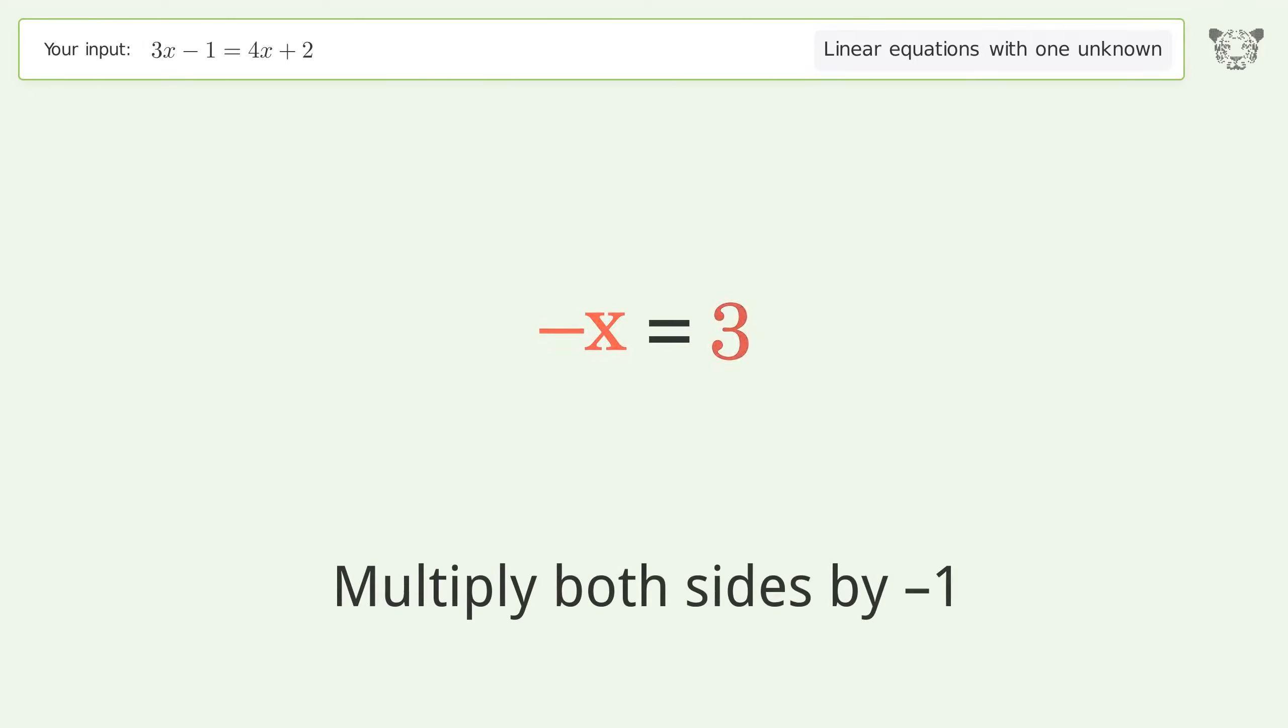Convert the x into a positive number. Multiply both sides by negative 1. Remove the ones. Simplify the arithmetic.